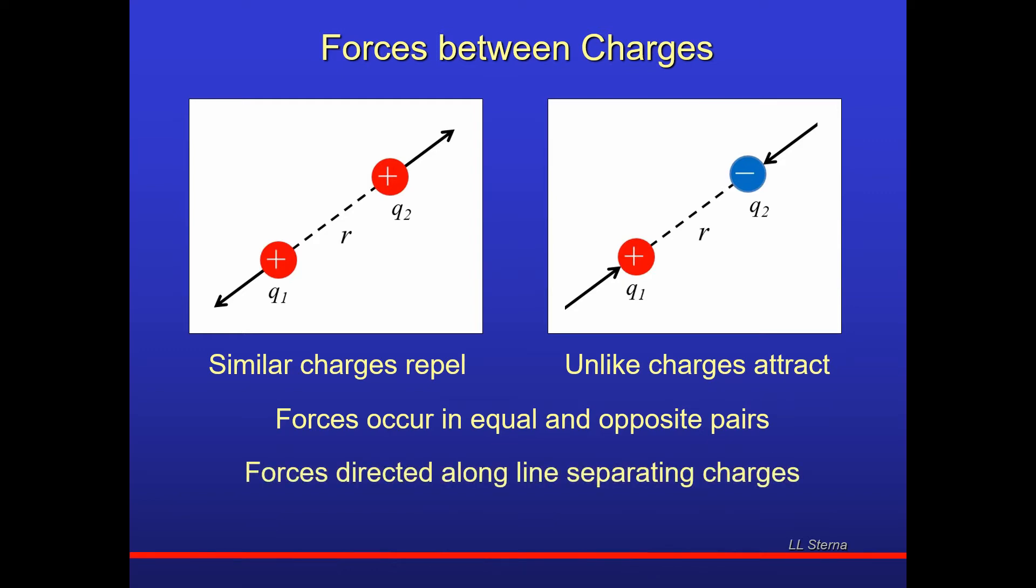What is the direction of the vector? Well, the forces are always directed along the lines separating the charges. In the two pictures, the dashed line is the line separating the two charges. For the two positive charges, the forces point away from one another, but they're along that line between the two charges. For the positive and negative, the two forces point toward one another. Again, they're along that line that separates the two charges.